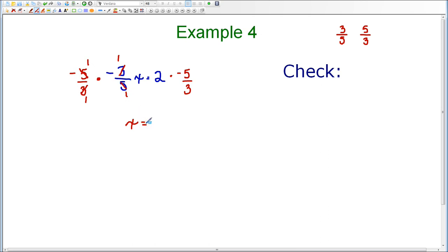Now on the right-hand side, I have the whole number two times negative five-thirds. I'm going to go ahead and make this a fraction so that it looks a little easier to multiply. And when I multiply two times negative five, I end up with negative ten, and one times three in the denominator is three.